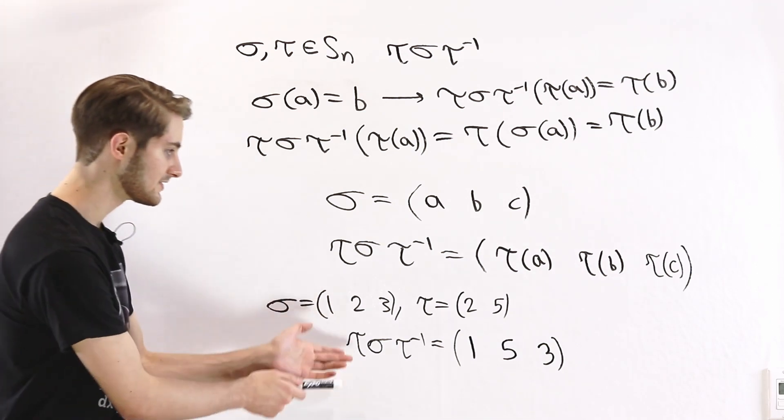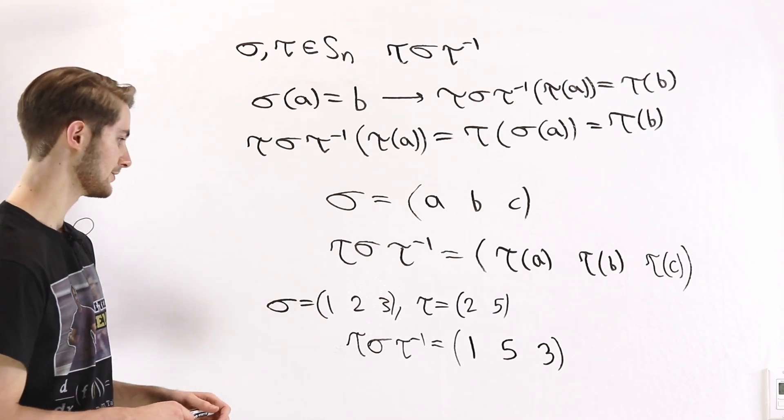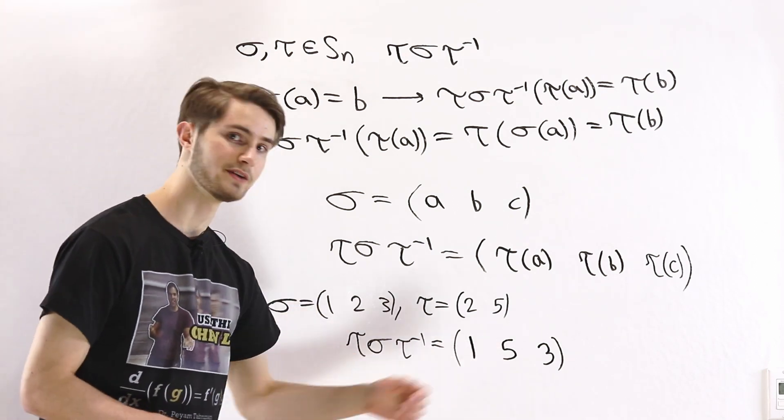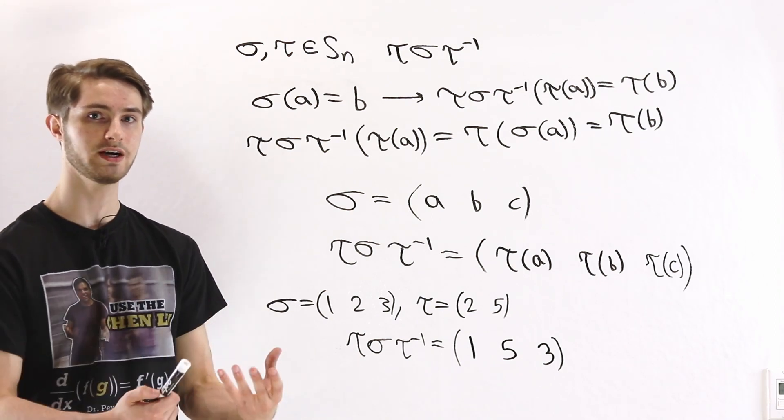People will sometimes refer to this as re-labeling the letters. When we conjugate, it keeps the cycle the way it is, but it rearranges the numbers inside of those cycles. So instead of a 2, we might have a 5.